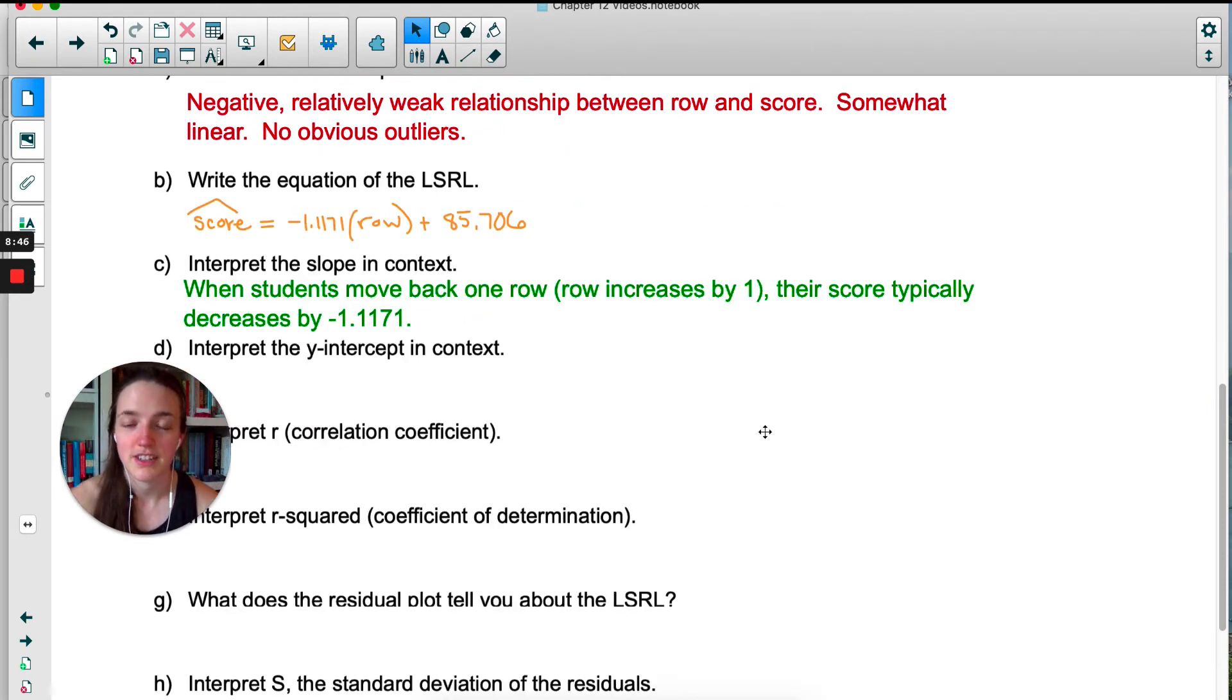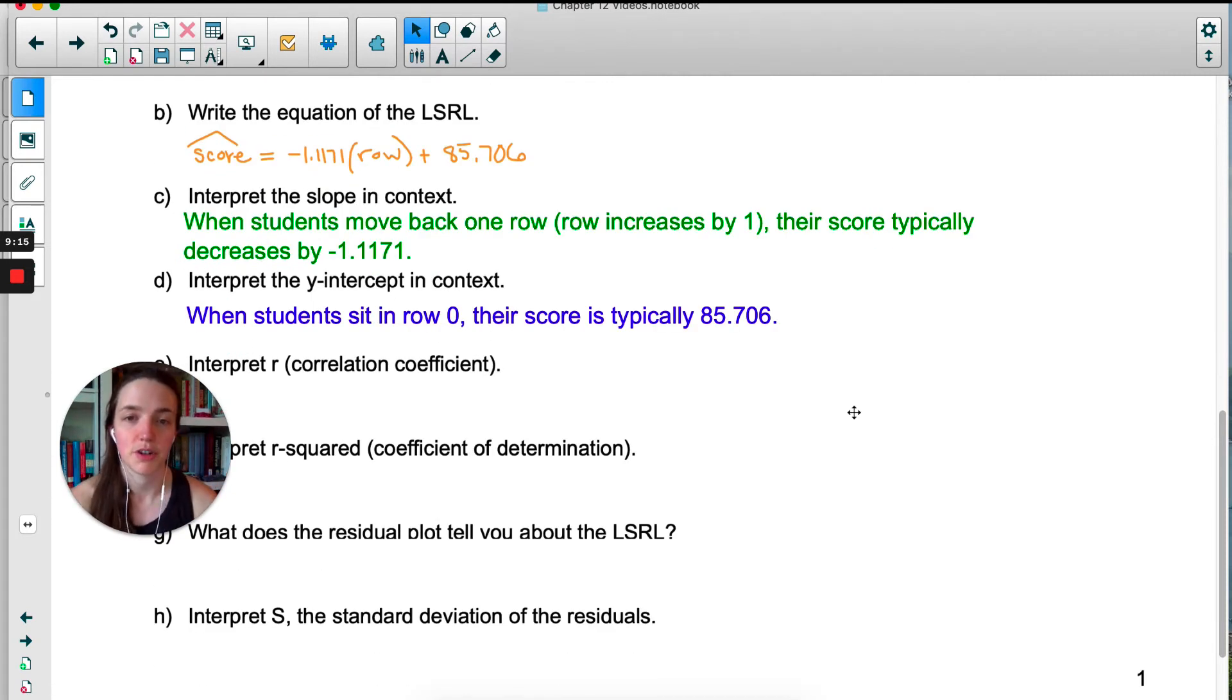Okay, to interpret the slope in context, the in context is really important. Make sure that your answer isn't generic. It should relate exactly to the question. So when students move back one row, that means the row is increasing by one, their score typically decreases by 1.1171. So there's specific context that relates that answer to the question. Same for the y-intercept. If a student sat in row 0, their score would be 85.706. There is no row 0 here. This would just be someone sitting on the floor at the very front of the room. Quite often the y-intercept does not make sense in real life, but it's still the y-intercept. So we still write it even though practically it doesn't make sense.